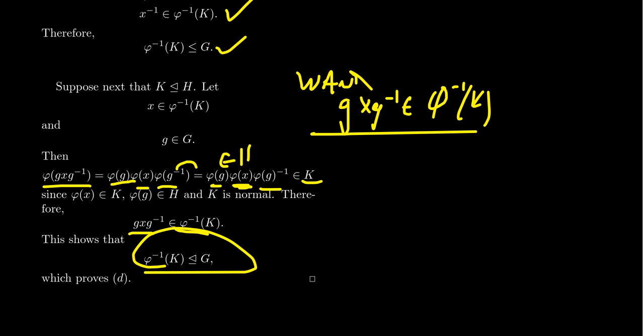In summary, homomorphisms are functions that preserve the group operation between groups. Automatically, preserving the group operation means you preserve the identity and the inverses. The image of a subgroup is a subgroup, the preimage of a subgroup is a subgroup, and the preimage of a normal subgroup is a normal subgroup.